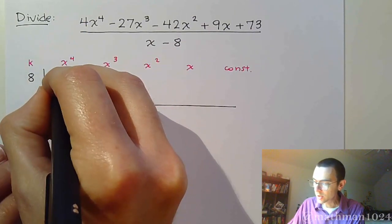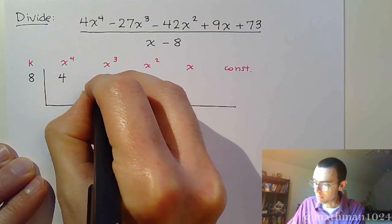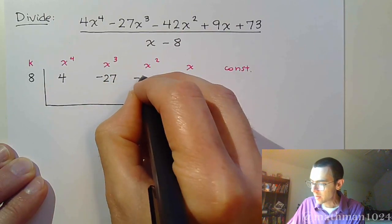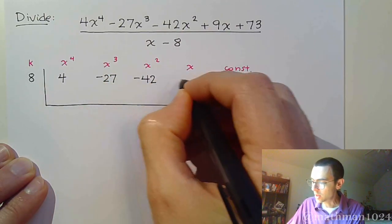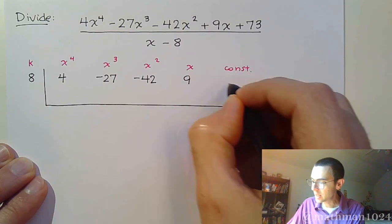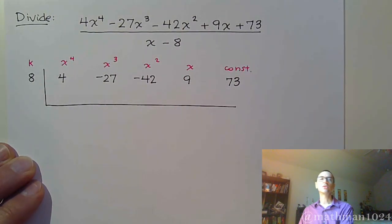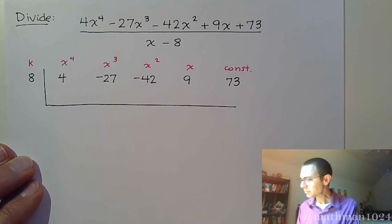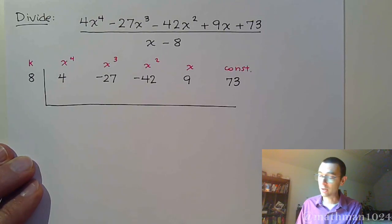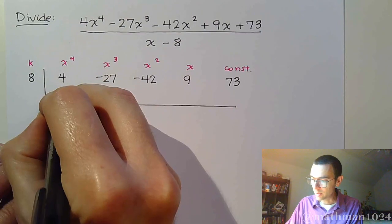We have 4x to the fourth, minus 27, then minus 42x squared plus 9x and plus 73. Please make sure you pay very close attention to your signs.